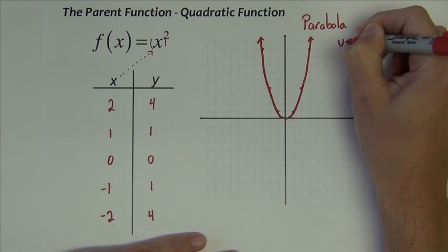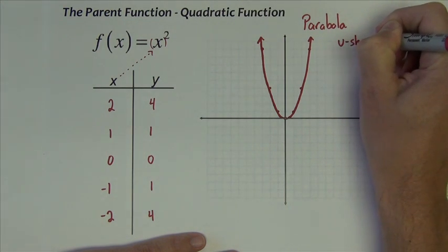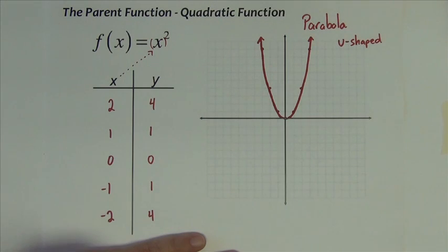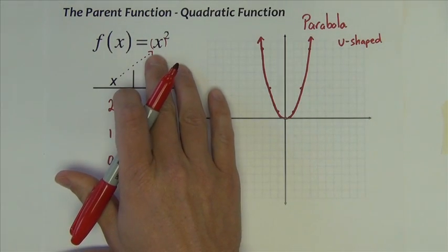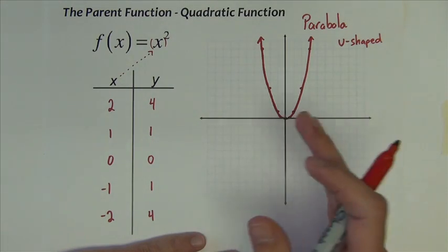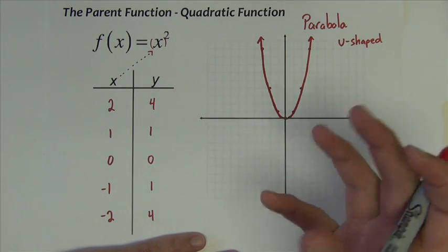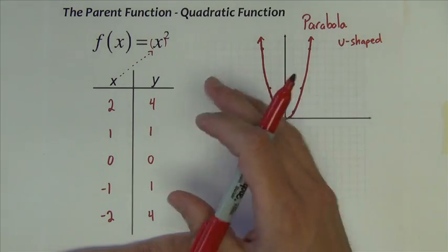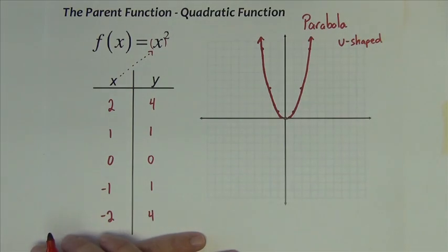If we connect them, we get a graph that's called a parabola. They are, of course, u-shaped. The graph of all quadratic functions, all x² functions, are parabolas. Some may be wider, more narrow than others. We can move them around, flip them over, do a variety of things with them, but they're all going to have the same basic shape.